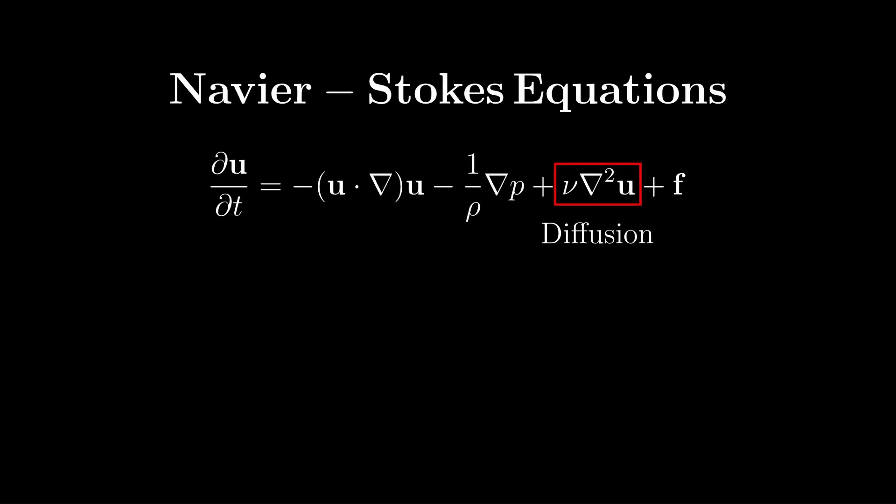Then, we can go to the third term of the Navier-Stokes equation describing diffusion. To solve this, we simply discretize the diffusion equation using the finite difference method. After some rearranging, we get the following equation. We then need to discretize the Laplacian operator using an iterative technique known as the Jacobi method.